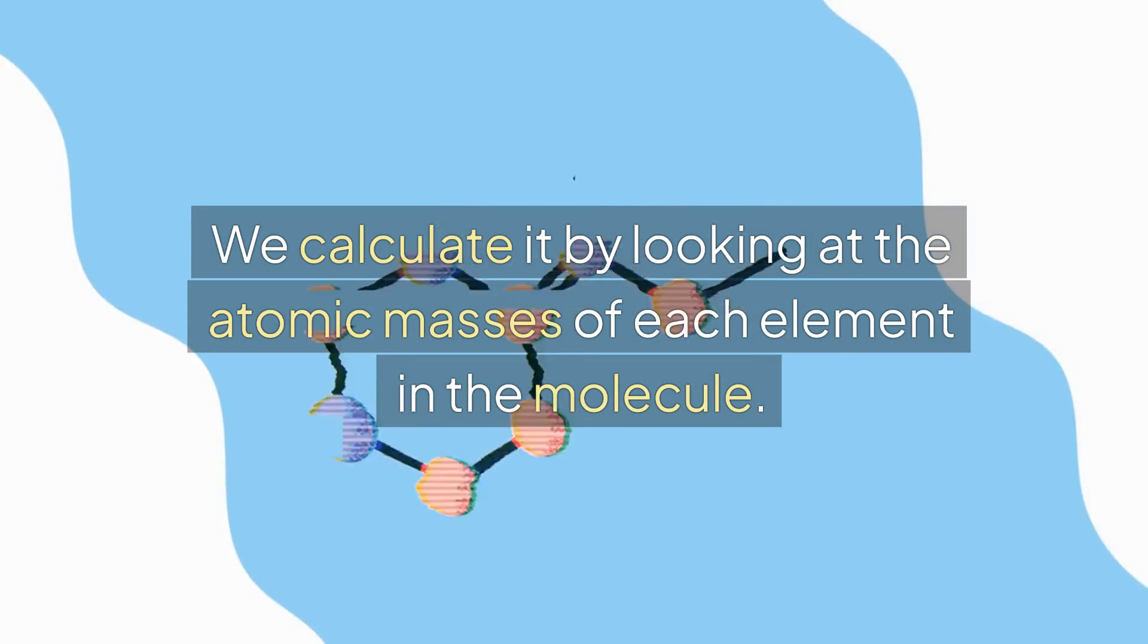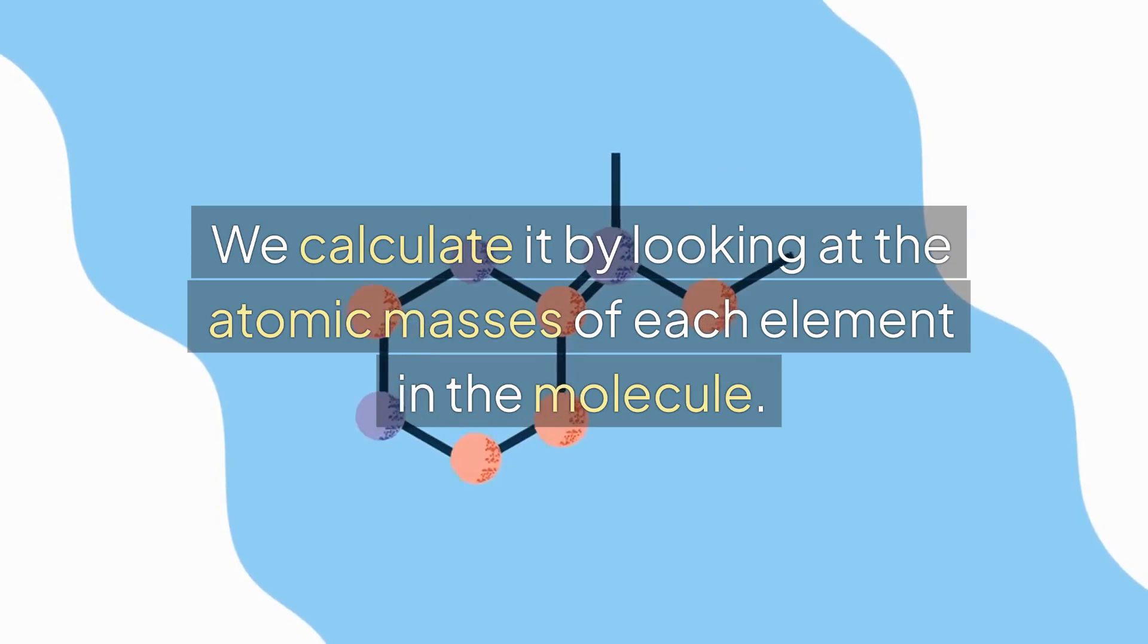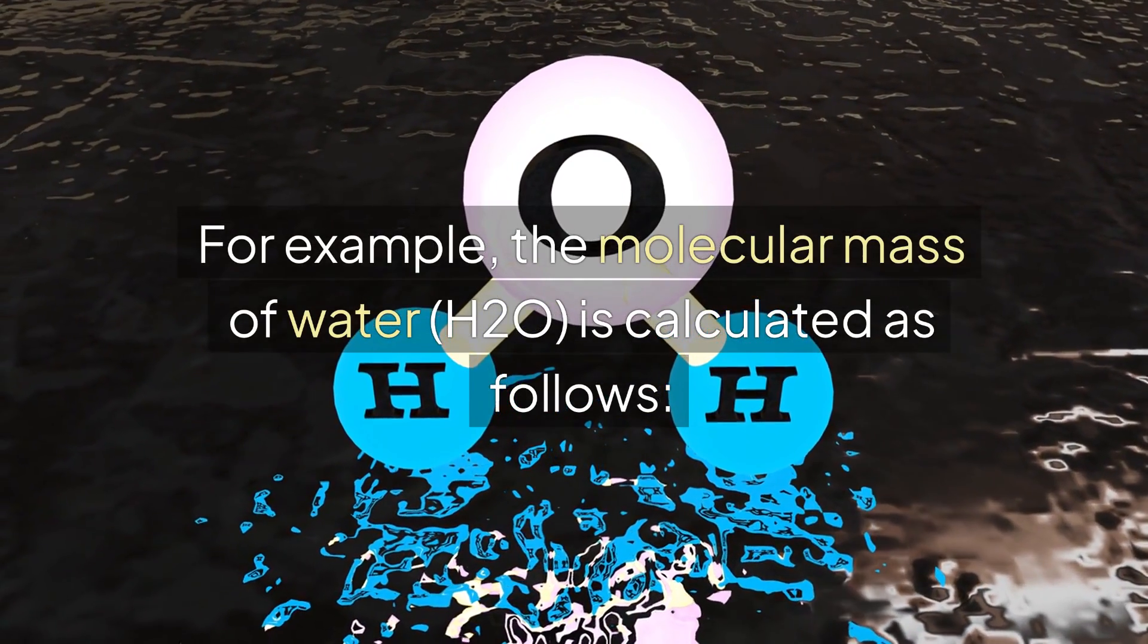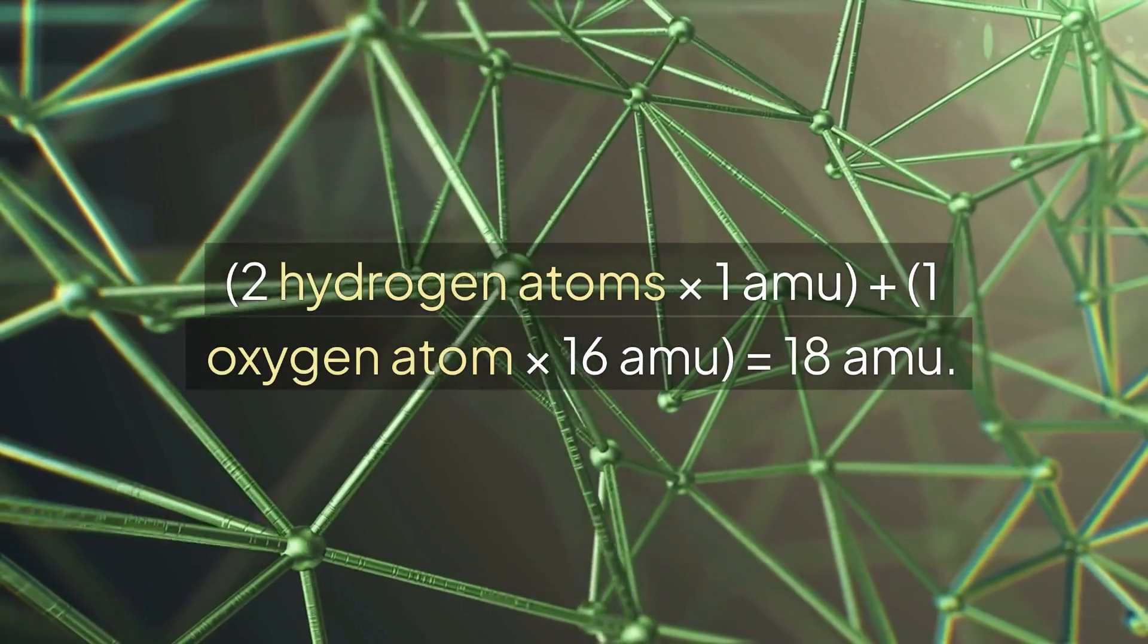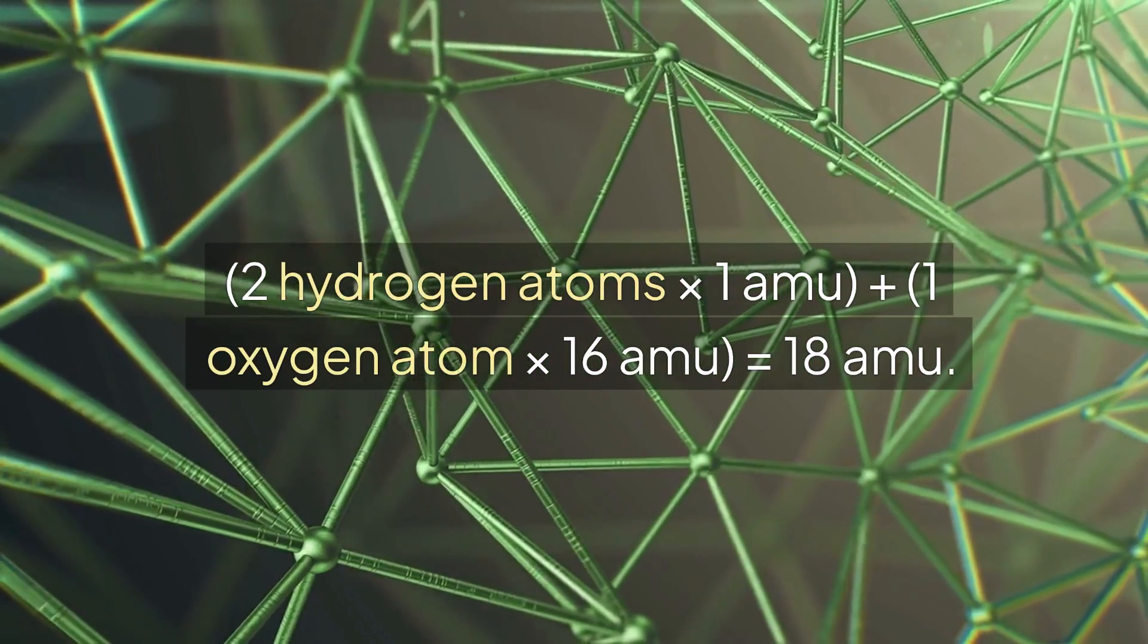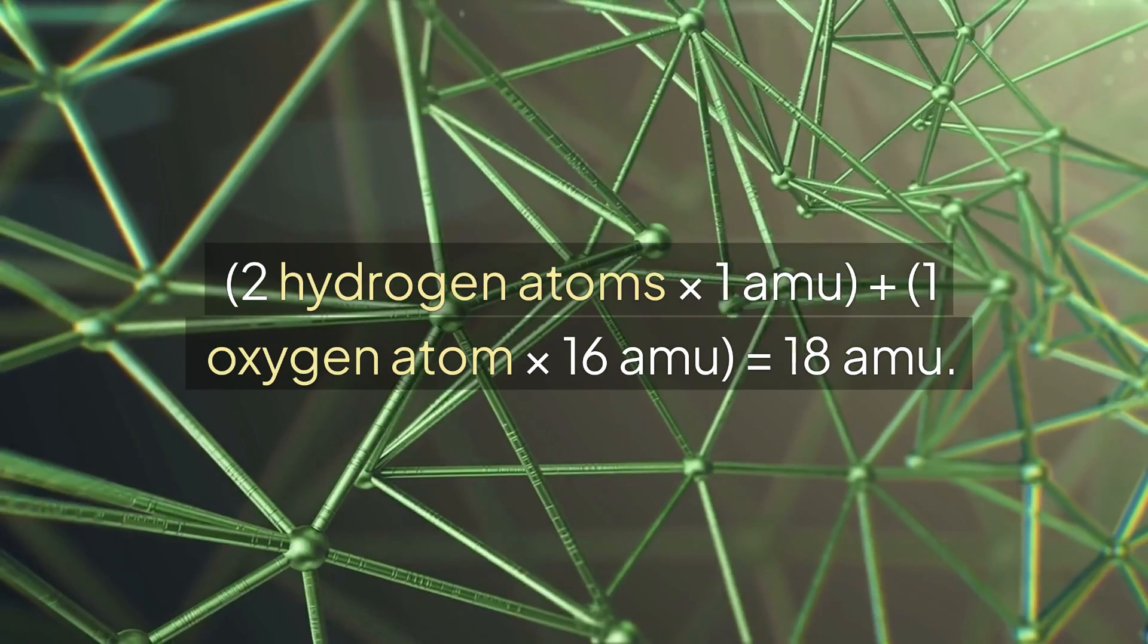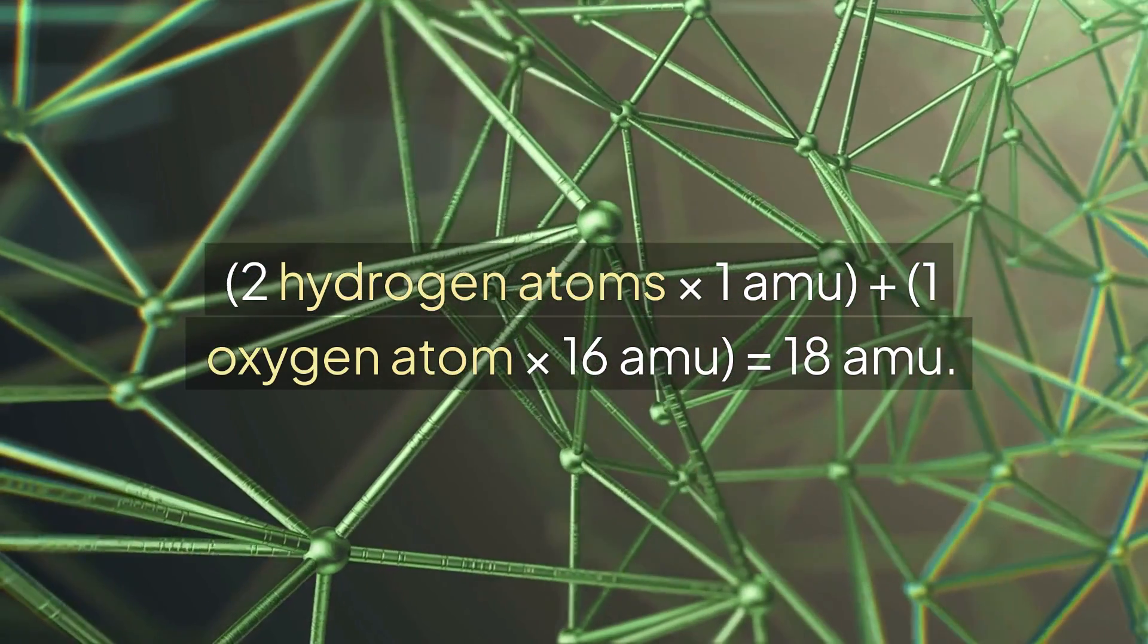We calculate it by looking at the atomic masses of each element in the molecule. For example, the molecular mass of water, H2O, is calculated as follows: two hydrogen atoms into one atomic mass unit, plus one oxygen atom into 16 atomic mass units, equal to 18 atomic mass units.